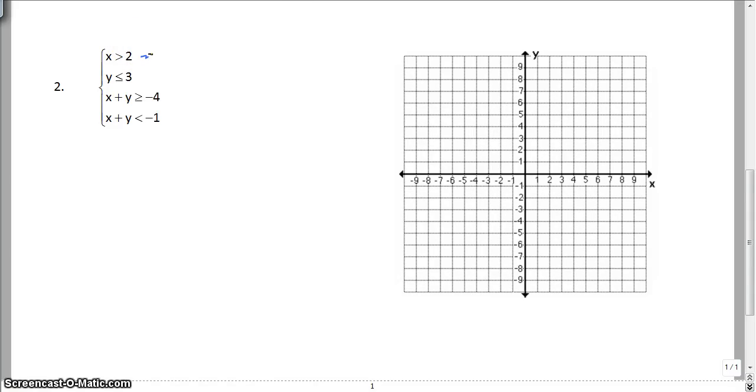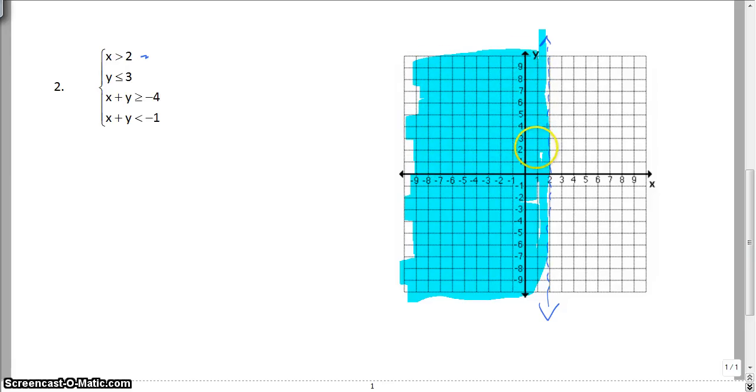First one. X is greater than 2. So, we have a vertical line dashed. And it's greater than, which means since we're shading false, we are going to shade this one to the left. And then, the next one we're going to do is y is less than or equal to 3. So, we're going to graph a solid line at y equals 3. It says it's less than, so we are going to shade in the opposite direction. And we are going to shade above.